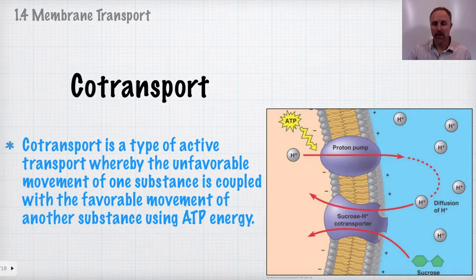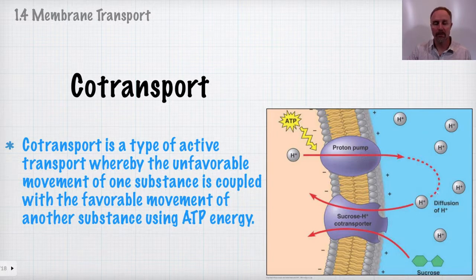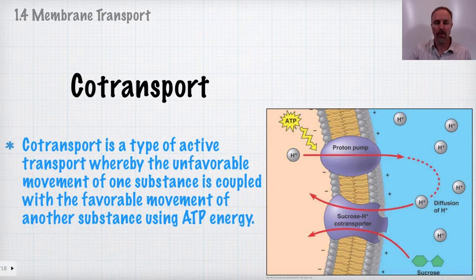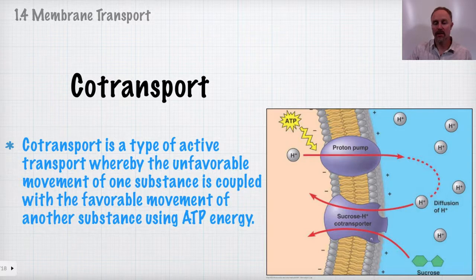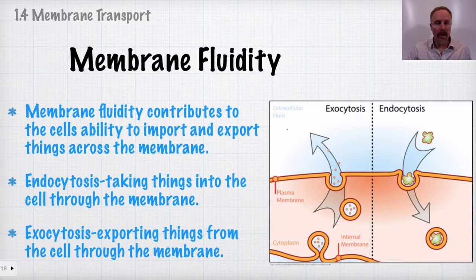Co-transport is another form of active transport because it involves the hydrolysis of ATP. Here, a protein pump uses ATP to move hydrogen ions out across the membrane against their concentration gradient, building up their concentration outside. As those hydrogen ions then move back down their concentration gradient through a co-transport protein, they bring sucrose molecules in with them. Because ATP is consumed in the process, this is an active process.